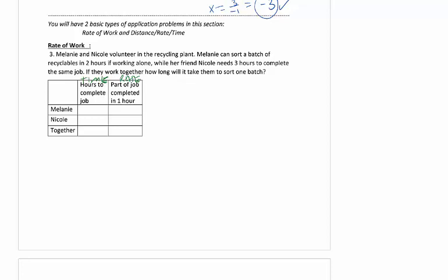So we're going to use that idea. So I want you to pause this and read the problem. Melanie can sort a batch of recyclables in two hours. So the time she does by herself is two hours. Nicole needs three hours to complete the same job. If they work together, how long will it take? So one of these will always be X. And two of them, they're going to give you the information. I like to draw a line here just so it's signaling to myself that the times above are by themselves and the time below is together.